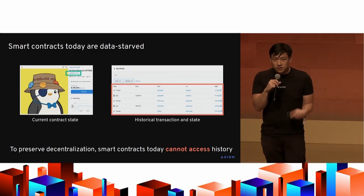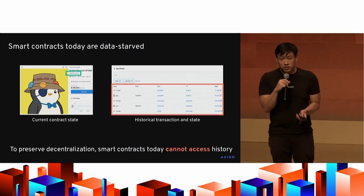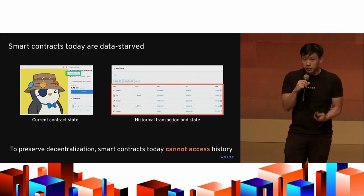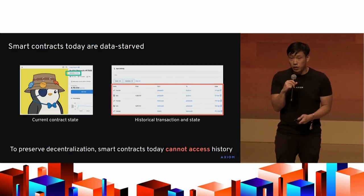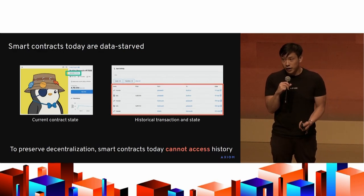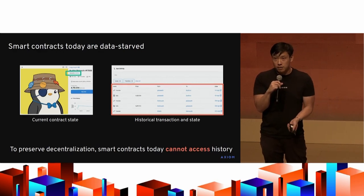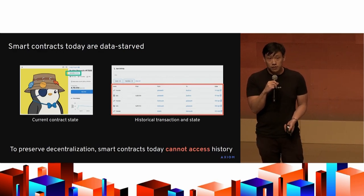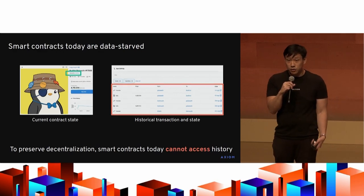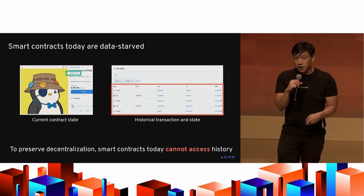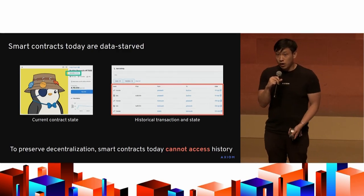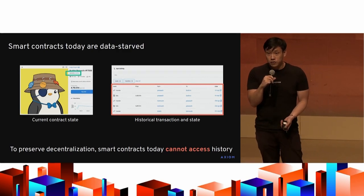This is not just an implementation flaw of Ethereum. Any blockchain that wants to be decentralized can't impose the requirement that validating nodes can access history, because that would require all full nodes to become archive nodes.